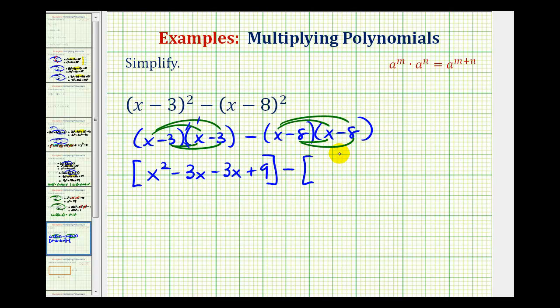Minus, now we'll find this product. So we'll have x times x, that's x squared. Then we'll have x times negative eight, that's minus eight x. Then negative eight times x is another minus eight x. And then we have negative eight times negative eight, that'll be plus 64.